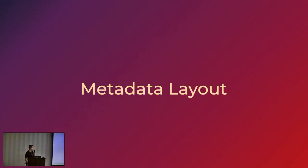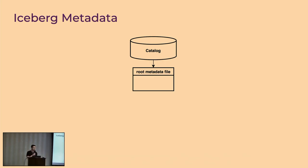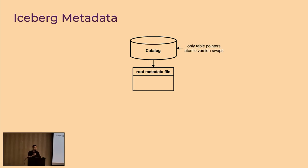Let's start with a few key metadata concepts in Iceberg so that everybody can follow the rest of the talk. Iceberg metadata resembles a persistent tree data structure, which is fairly popular in functional programming. The state of the table is described by the catalog, which maps a table identifier into the currently valid root metadata file location. The catalog itself only stores the pointers — it doesn't store any table state.